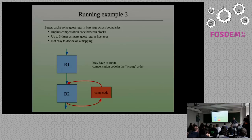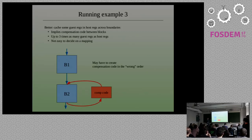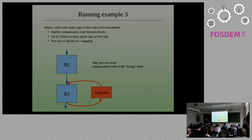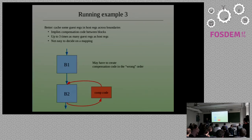So we would like to do better. The approach of flushing everything back to memory at the end of a basic block is terribly naive by common standards of building these kinds of things. What we would really like to do is hold some values of the guest registers in the host registers as we go across basic block boundaries. But that's actually not so simple to do — there are a couple of problems.